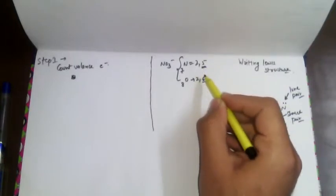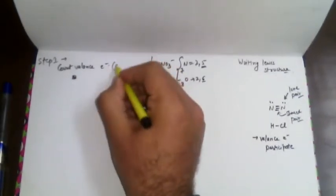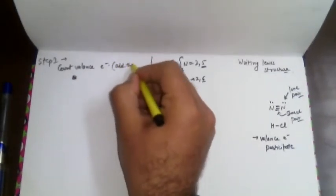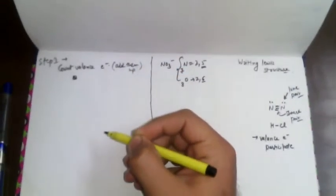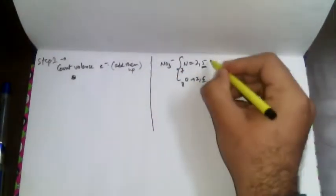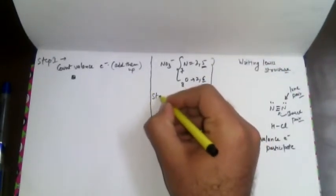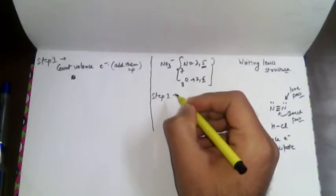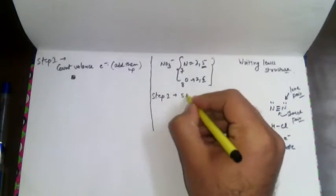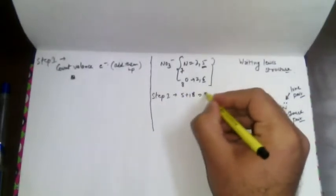We need to count the valence electrons and add them all together. So for this species, 5 plus 18 equals 23 total valence electrons at step one.